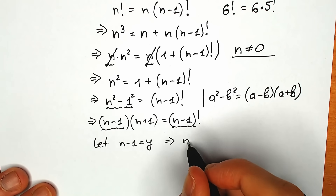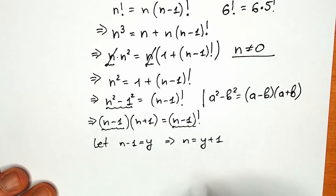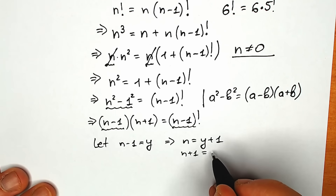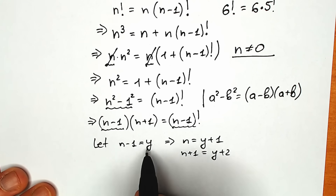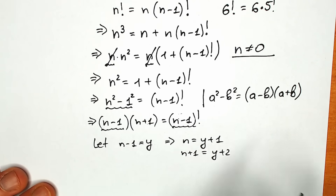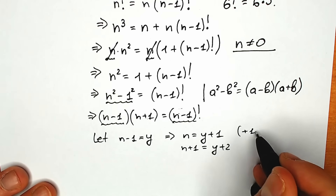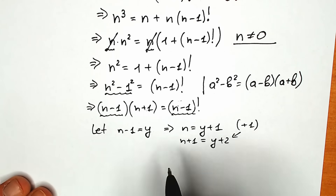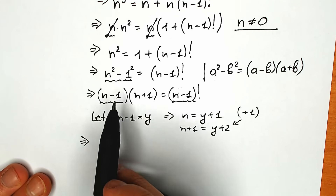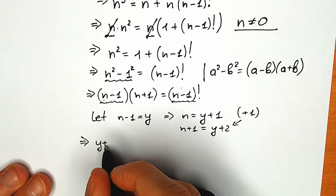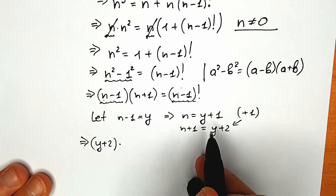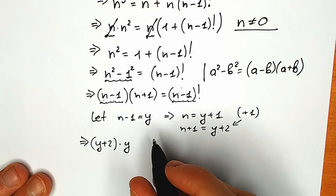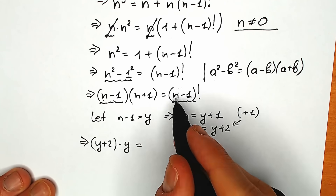With the substitution n−1 = y, we have n = y+1, and therefore n+1 = y+2. We have everything for the substitution: n−1 = y and n+1 = y+2. After substituting, our equation becomes y times (y+2) equal to y factorial.